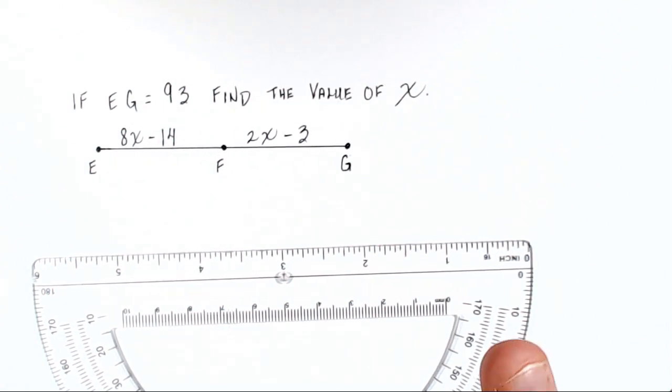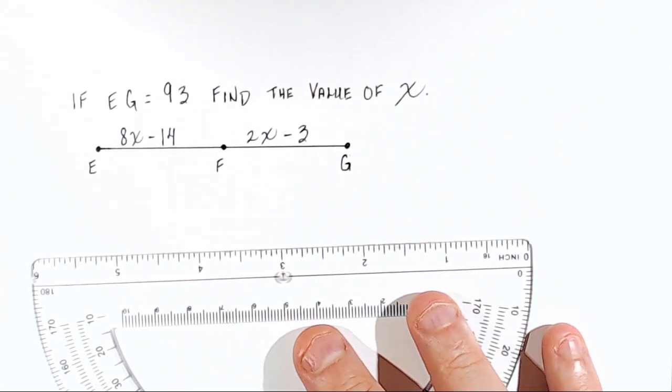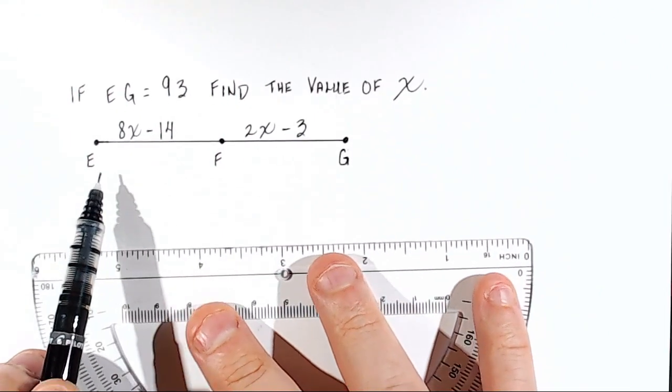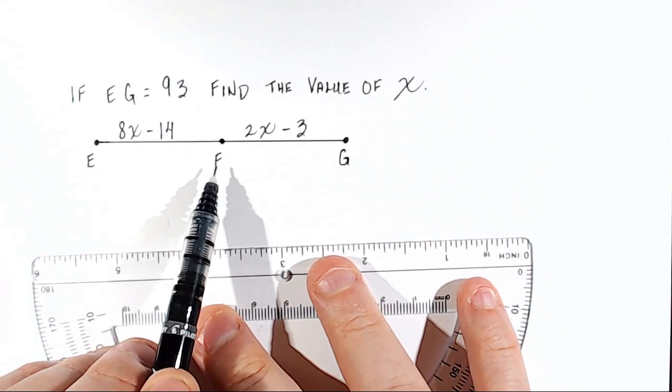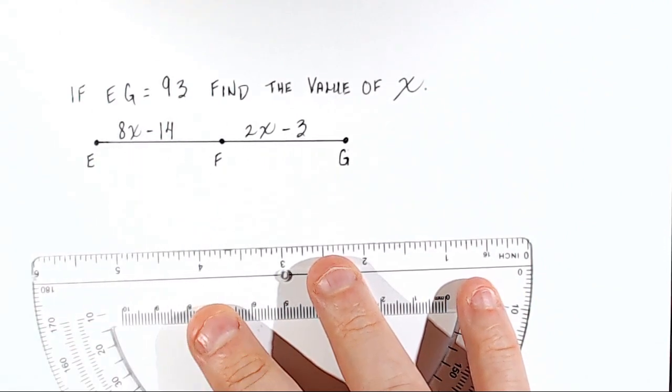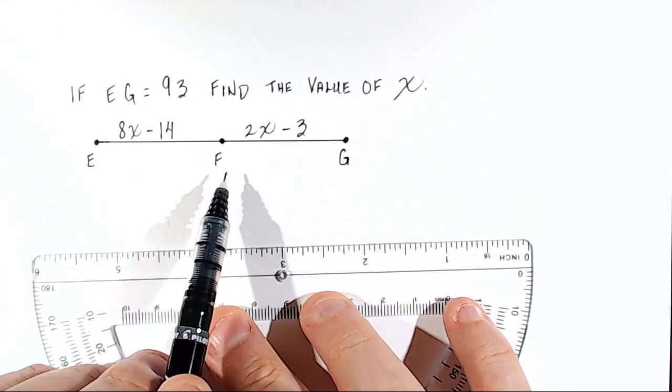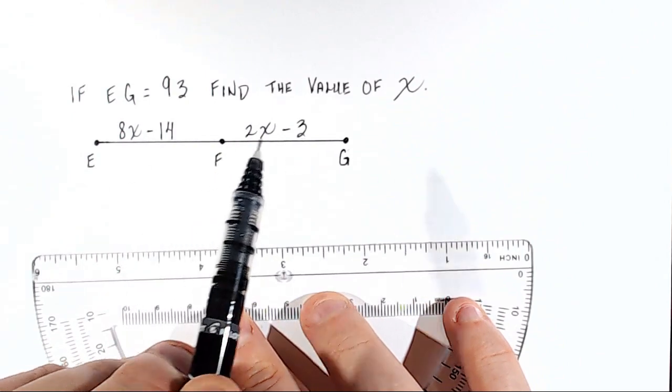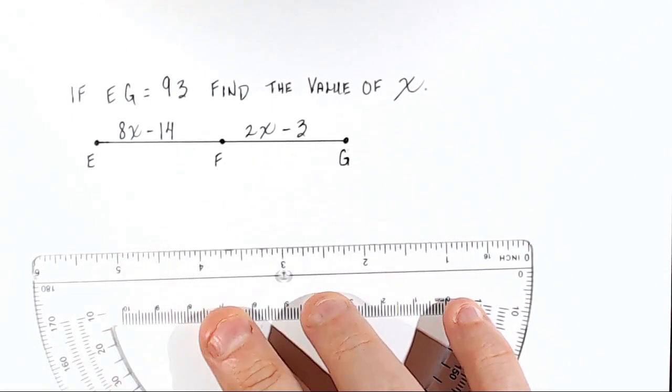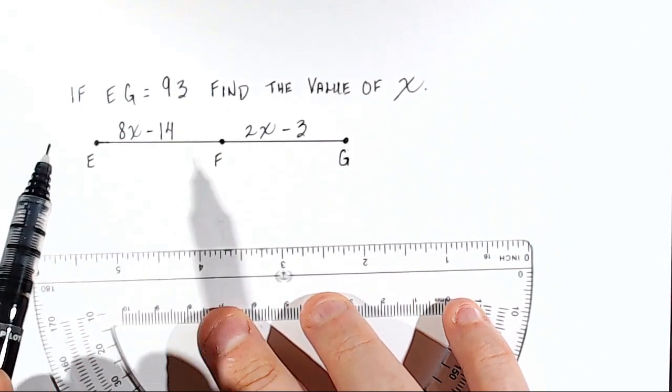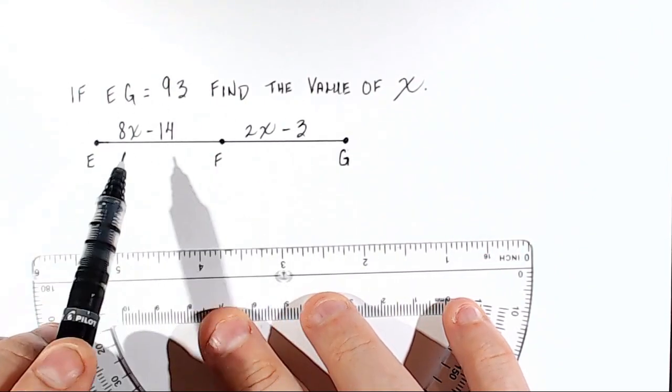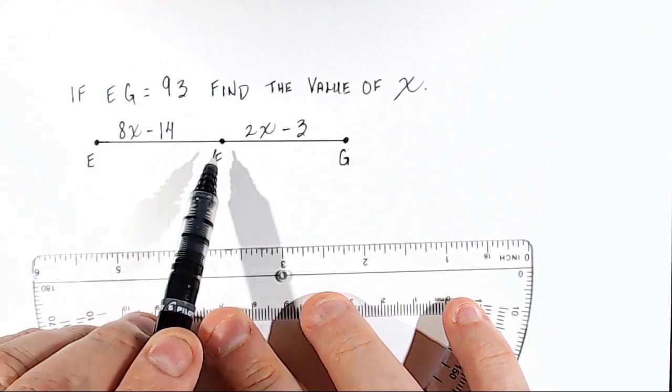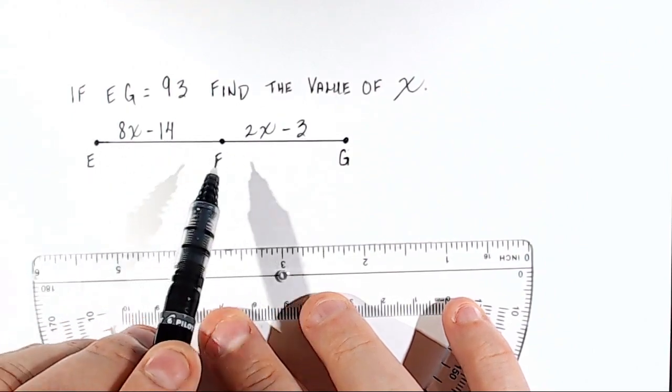So in order to understand how to solve this problem, we have to notice that they're telling us the distance from E to F equals 8X minus 14. Likewise, the distance from F to G equals 2X minus 3. So the distance from E all the way over to G is the sum of these two distances, EF plus FG.